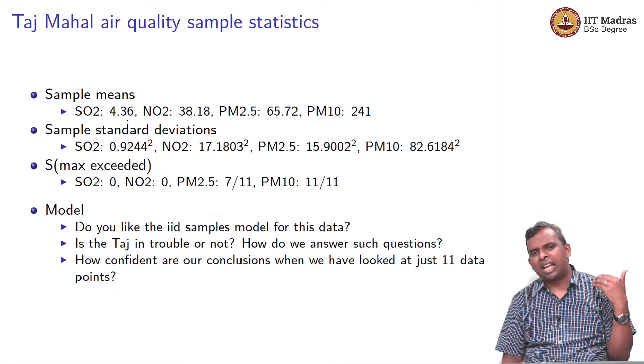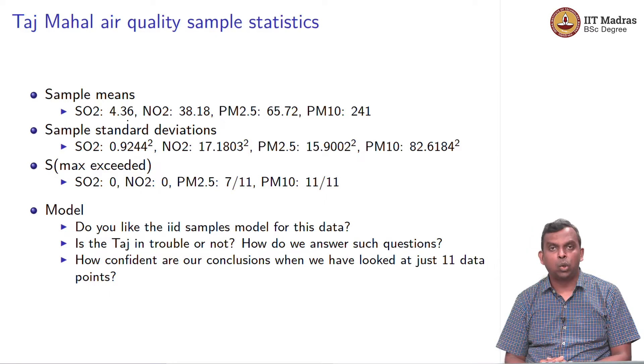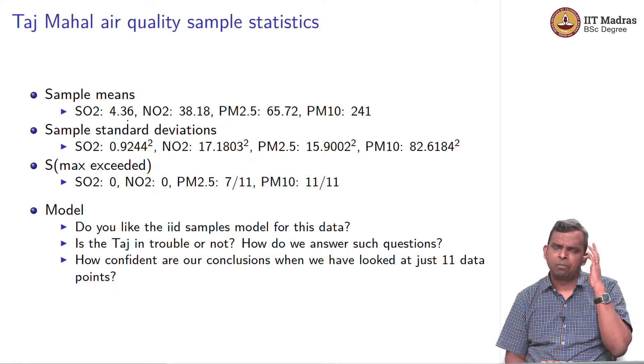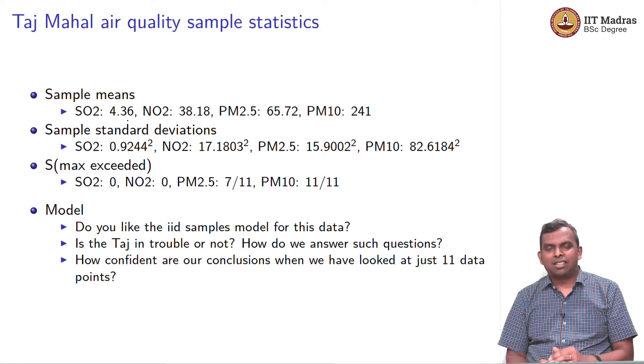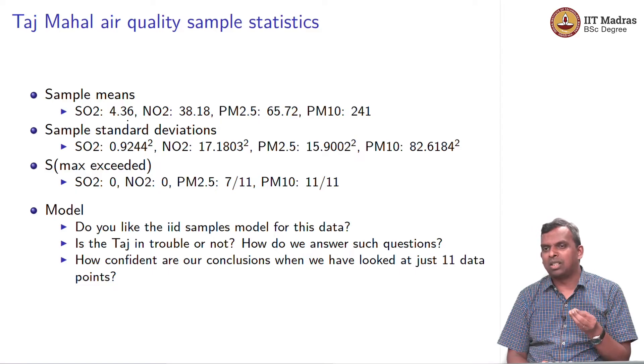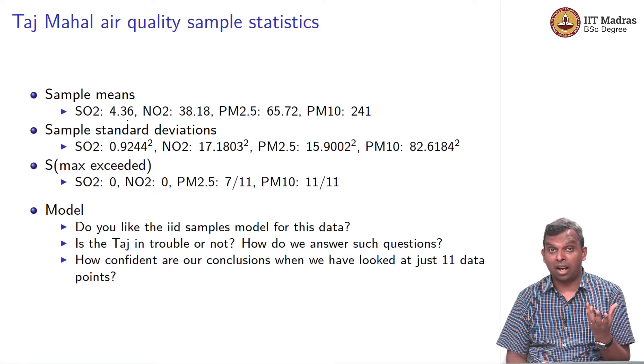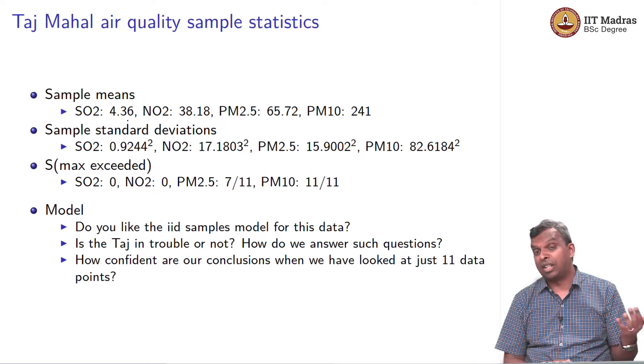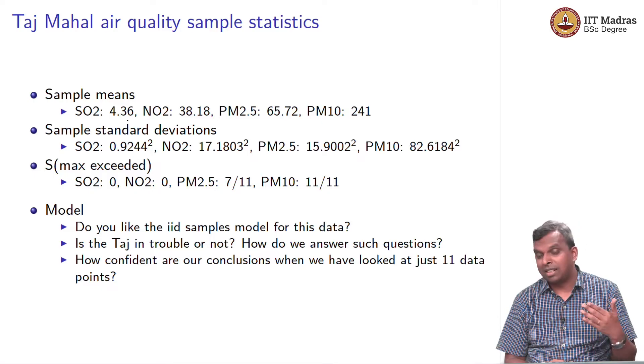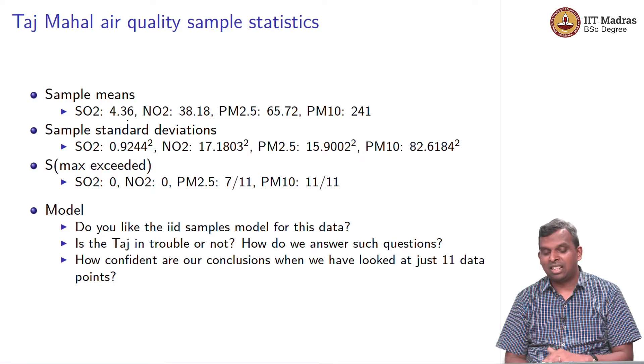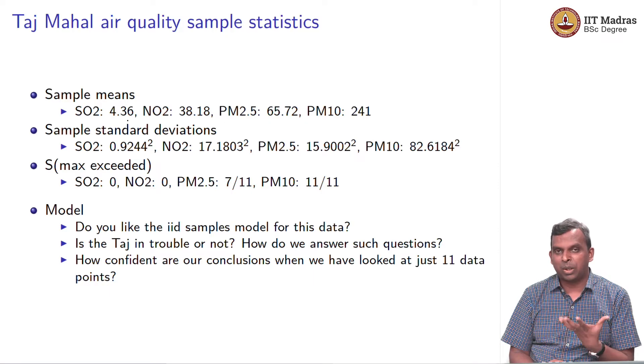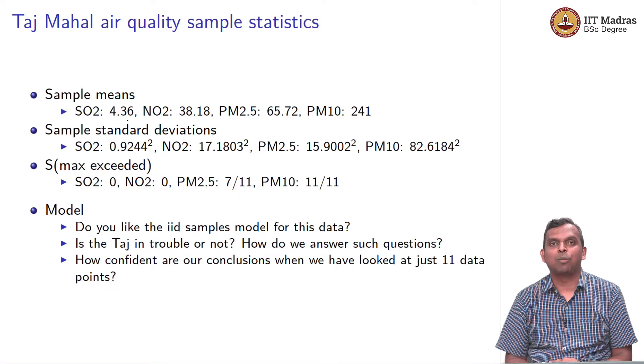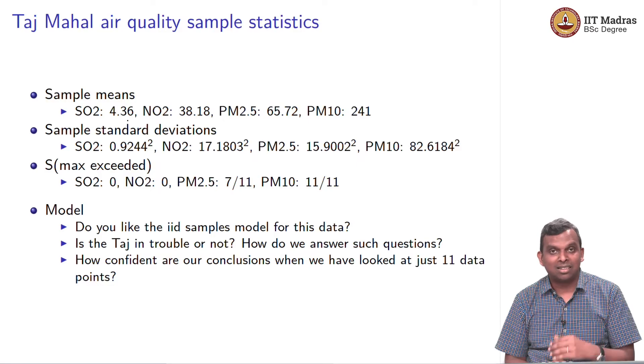The phenomenon of how PM10 matter gets generated at the Taj Mahal or how PM2.5 matter gets generated might be complicated to model. Statistics might come and help you. You may want to say some statistical statements about it. But then do you really like IID samples model for this data, the data that came out day after day? The pollution levels, is IID samples model good? Do you think IID is the way to go or do you think what happened one day will influence what happened the next day? One can think about it. You need slightly more knowledge about how this particulate matter gets generated.